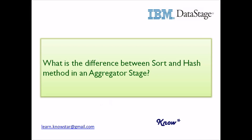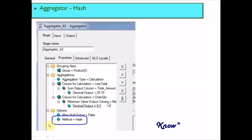What is the difference between the sort and hash method in an Aggregator stage? Most developers have not paid attention to this, but there is a method that needs to be chosen in an Aggregator stage. By default this is set to hash, and there are very few instances where we need to change it. Let's understand the difference between the hash method and the sort method.